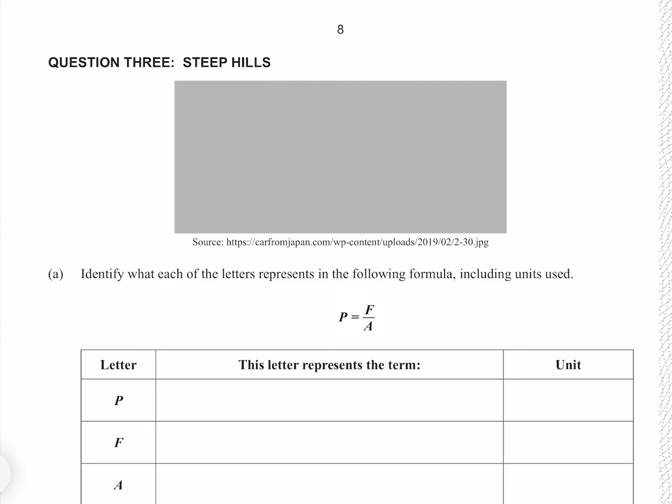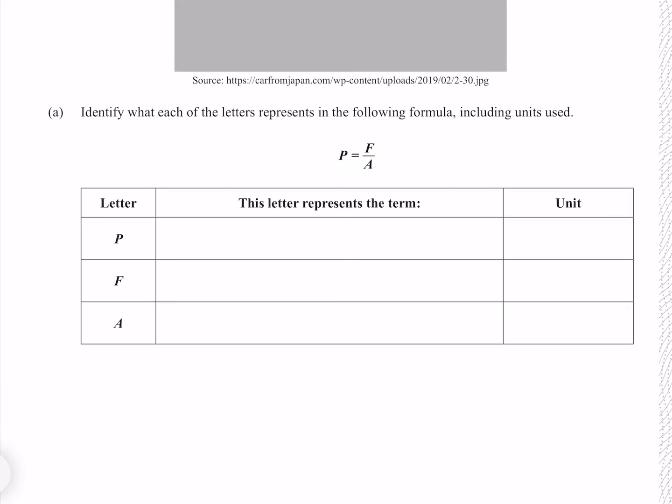Question 3. Identify what each of the letters represents in the following formula, including units used. As you should already know, P is for pressure measured in pascals, F is for force measured in newtons, and A is for area measured in meter squared.